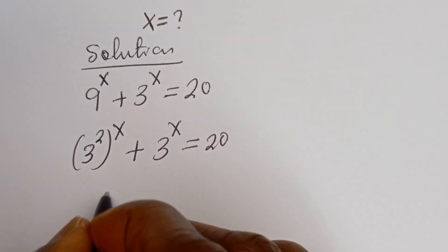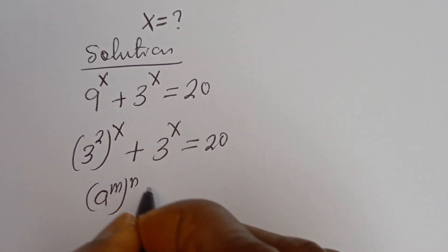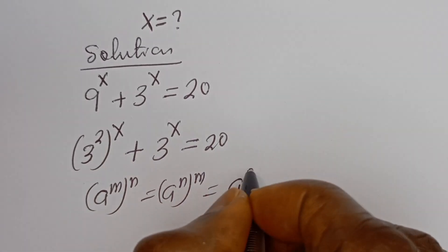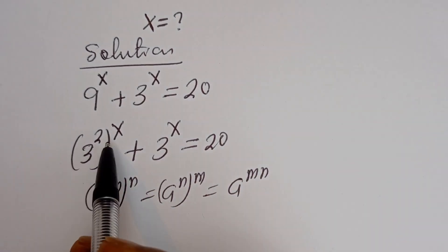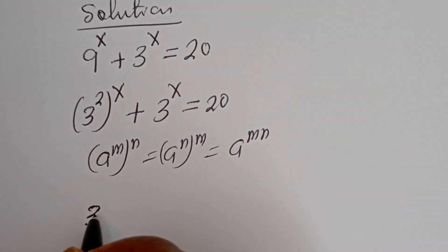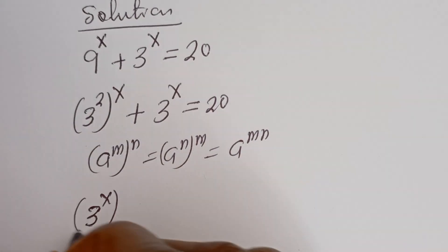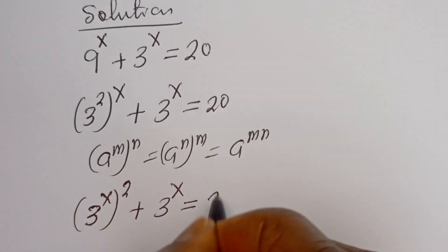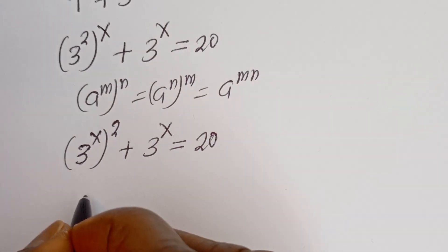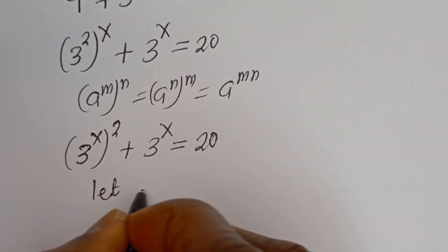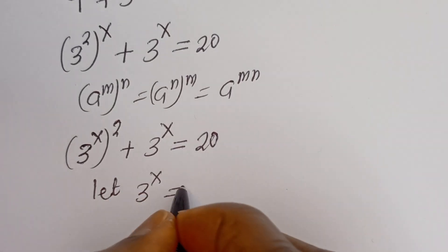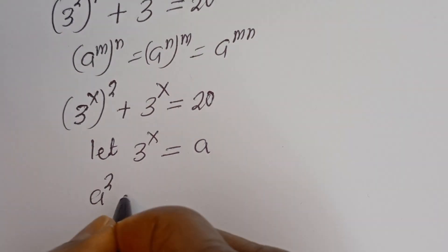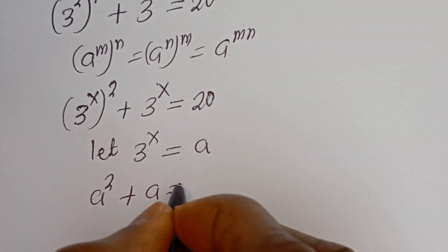Take note that if you have a to the power of m, to the power of n, this equals a to the power of n to the power of m, which equals a to the power of mn. Then this can be written as 3 to the power of 2x plus 3 to the power of x is equal to 20. Now let 3 to the power of x equal a.